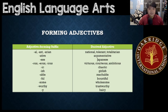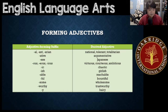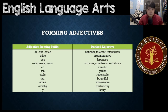Then we have suffixes too. Like '-al', '-ant', '-arian' — for example, 'national', 'tolerant', 'totalitarian'. '-ative', like 'argumentative'. '-ese', like 'Japanese' or 'Chinese'. '-ous', '-ious', '-ious' — like 'virtuous', 'courteous', 'ambitious'.